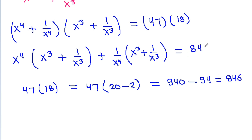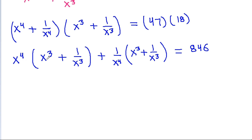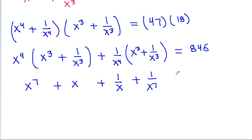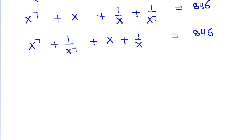So the product is 846. Expanding, x power 4 times x cubed is x power 7, x power 4 times 1 by x cubed is x, 1 by x power 4 times x cubed is 1 by x, and 1 by x power 4 times 1 by x cubed is 1 by x power 7. So we get x power 7 plus x plus 1 by x plus 1 by x power 7 equals 846.